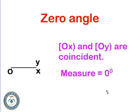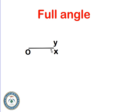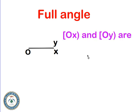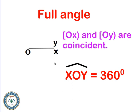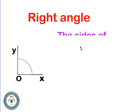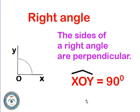For a zero angle, OX and OY are coincident — their measure is zero degrees. Another case where sides are coincident is the full angle, which makes a full rotation of 360 degrees, like a circle. For a right angle, the sides are perpendicular and the measure is 90 degrees; you can verify this using a set square or protractor.